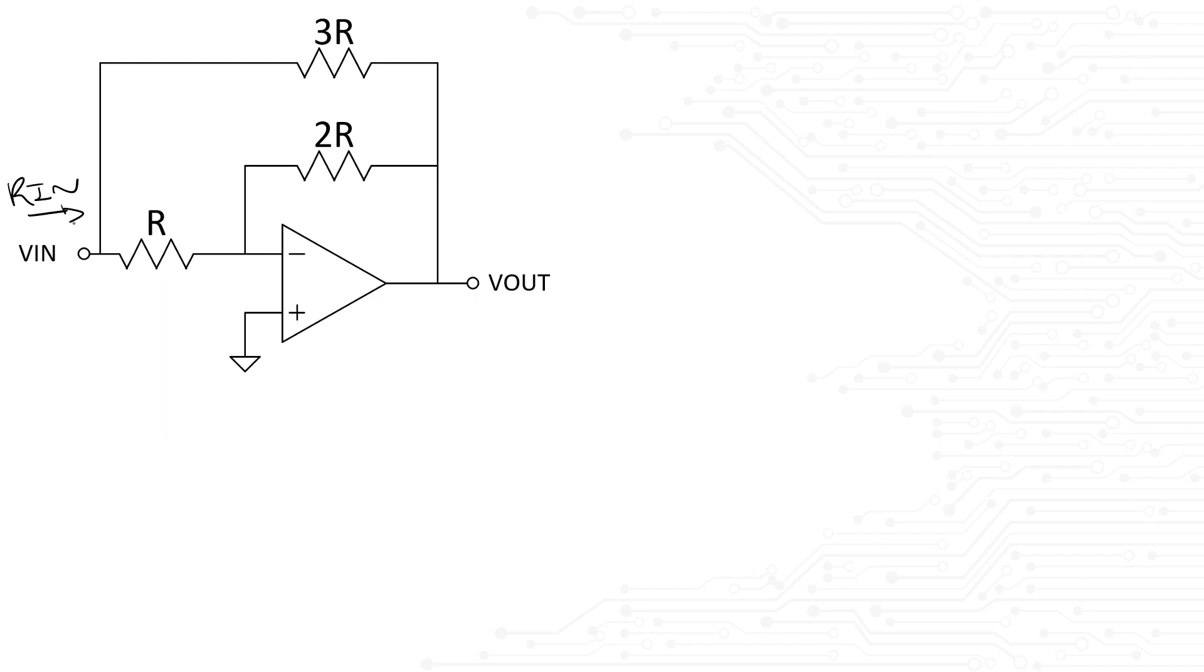We can start by telling the interviewer something very obvious but still worth mentioning so he knows you apply your basic knowledge to solve any problem. We can say Ohm's law dictates that V equals I times R. Solving for R means V divided by I. Any problem about input or output impedance boils down to this.